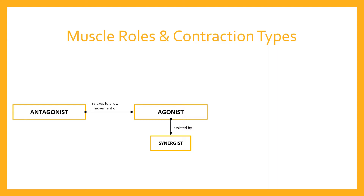Of course, if the synergist is contracting and assisting the agonist, the synergist can only move if the synergist's own antagonist is also relaxing, since some synergists have antagonistic muscles working in the opposite direction. So as the antagonist relaxes on one side of the joint, that relaxation allows both the agonist and the synergist to contract together and produce an overall greater force of contraction.